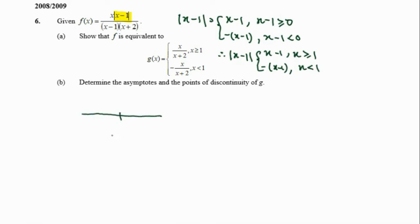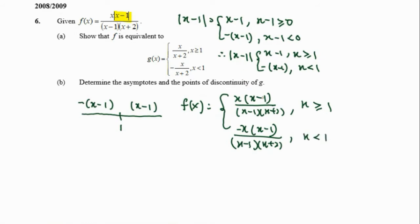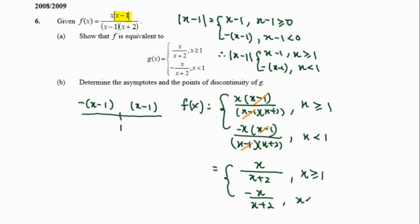We express our piecewise function in intervals: where x is less than 1 we use negative(x minus 1), and where x is greater than 1 we use (x minus 1). For this function f(x), it will become x(x minus 1) over (x minus 1)(x plus 2) for x greater than or equal to 1, and we select negative(x minus 1) for x less than 1. We can simplify our factor of (x minus 1). Our function will equal x over (x plus 2) and negative x over (x plus 2). This is our g(x) shown.